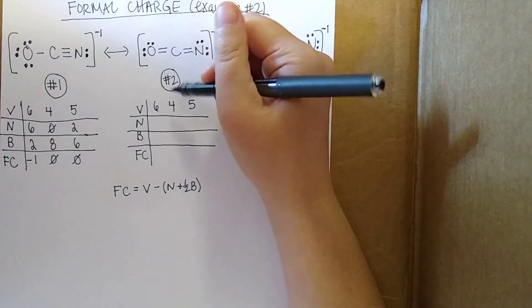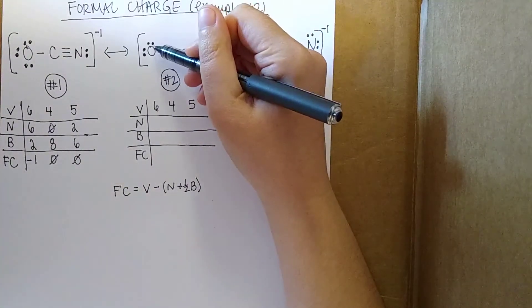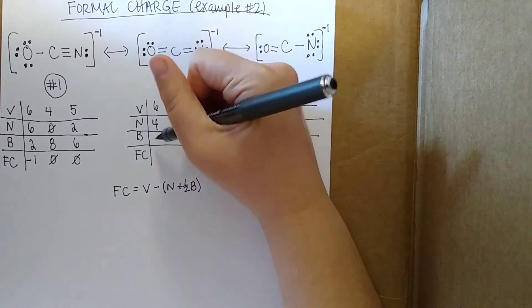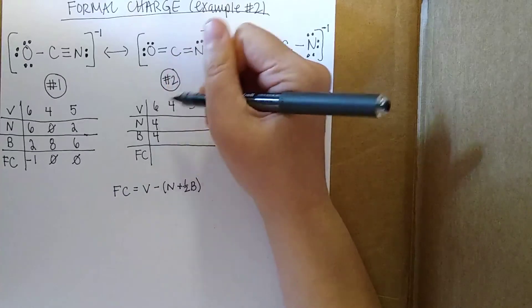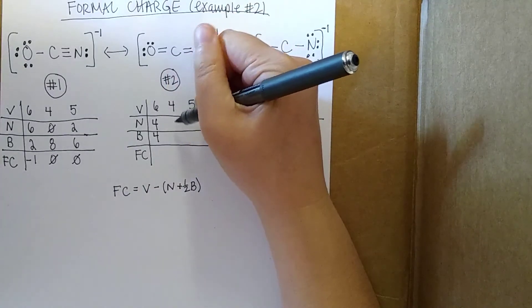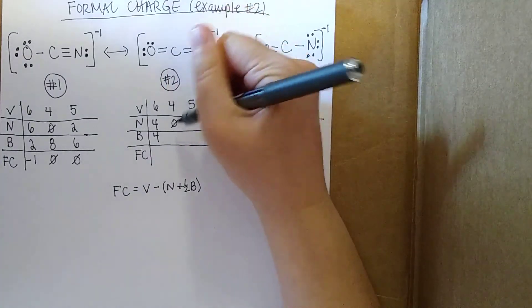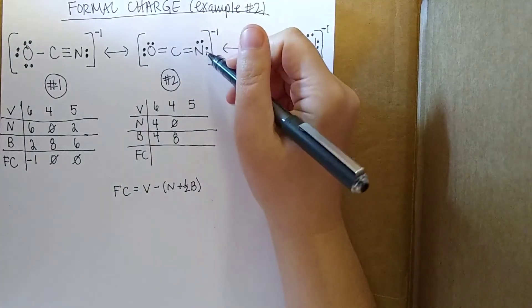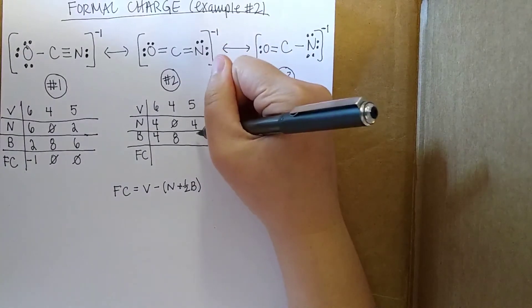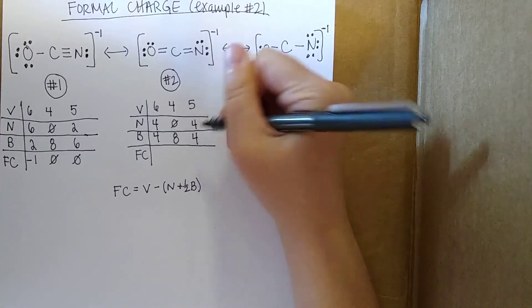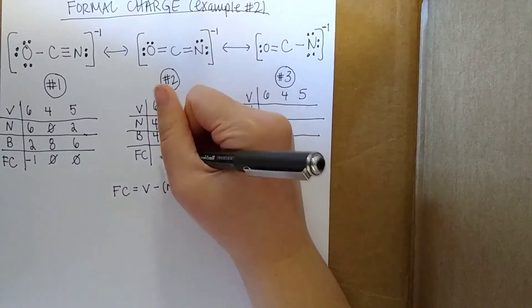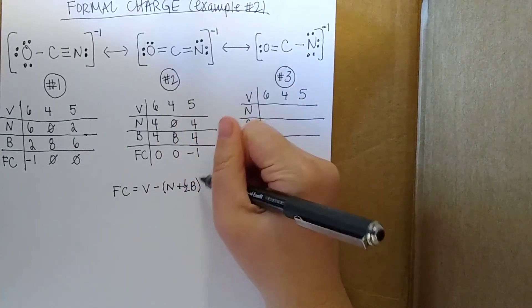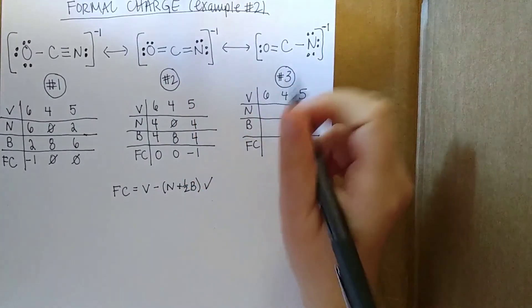Let's do case number 2. For the oxygen, this time we have 4 non-bonded electrons and 4 bonded. For carbon, we have 0 and 8. And then for nitrogen, we have 4 and 4. I'll just fill in the formal charges here. Once again, remember, just evaluate this expression I have written right here.